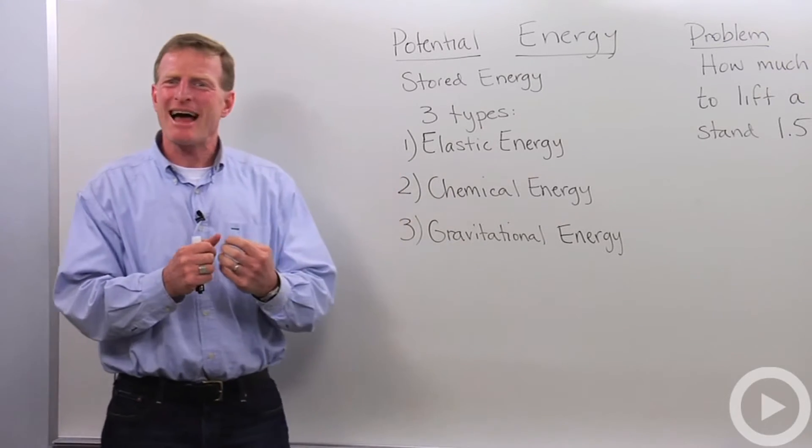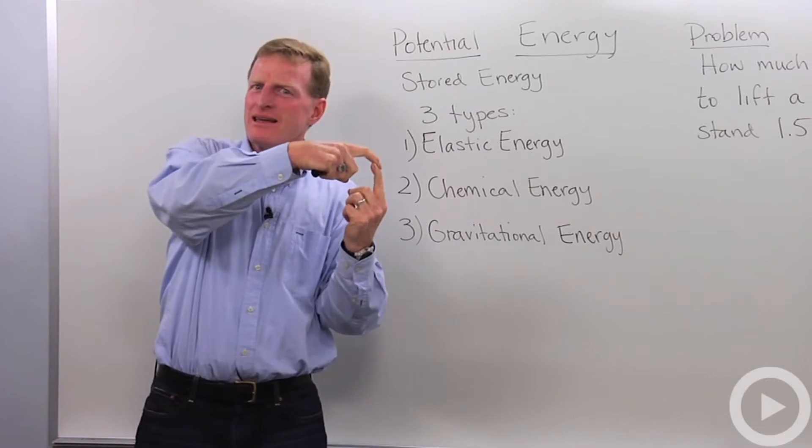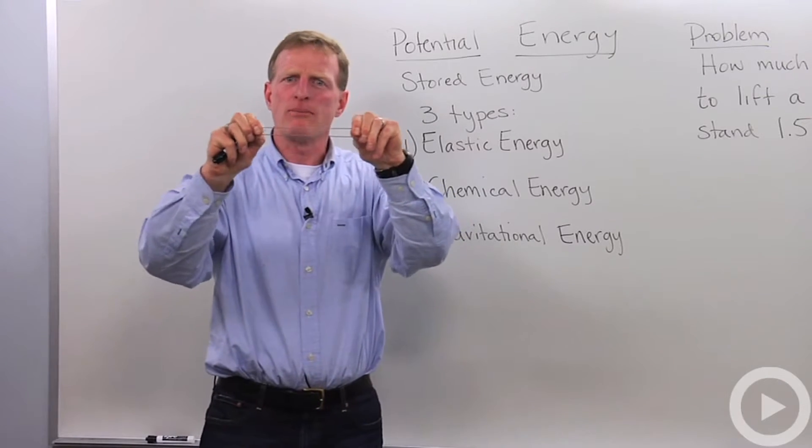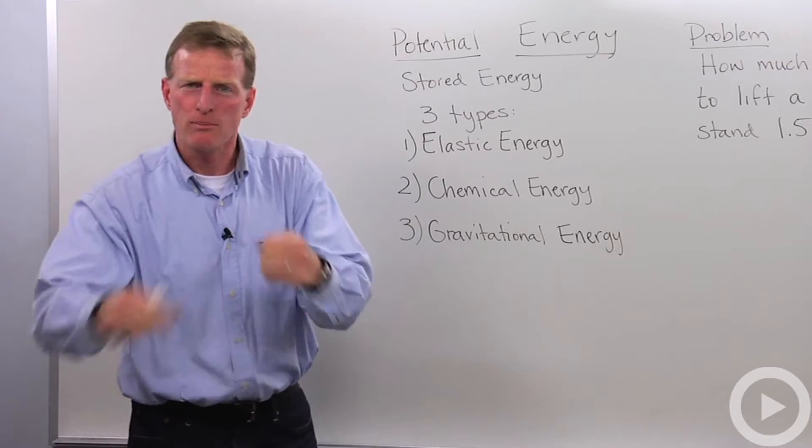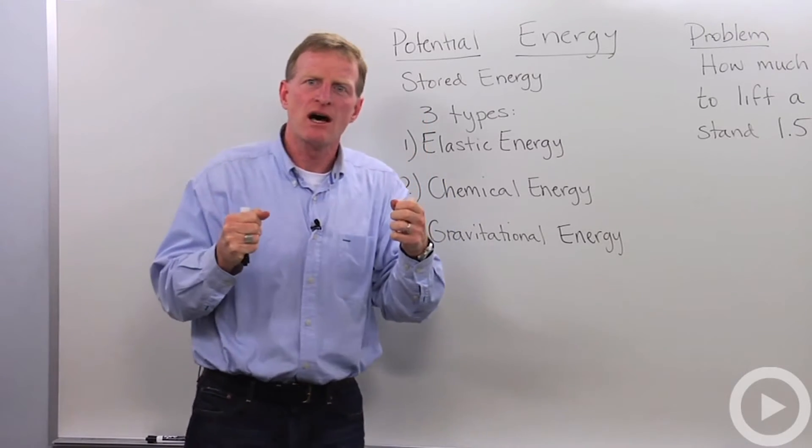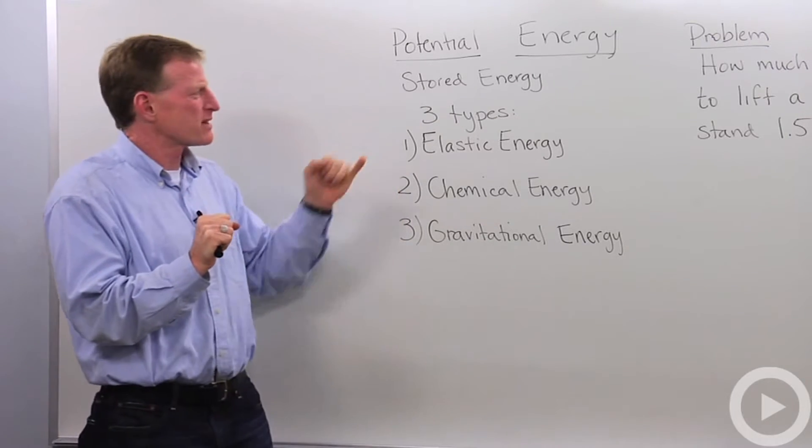The first is elastic energy, like when you bend a bow in a bow and arrow, you're storing energy in that bent bow, or in the elastic in a rubber band or in something with a bungee cord that has elasticity. When you pull that, you can get some stored energy that you can then release, or a spring, maybe a spring that you compress. Those are all types of elastic energy.